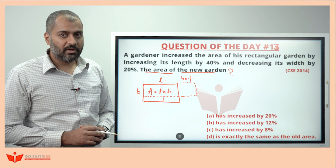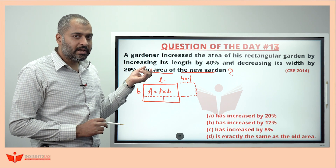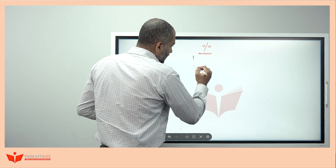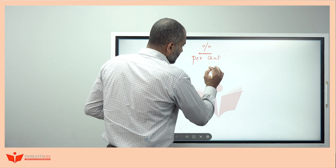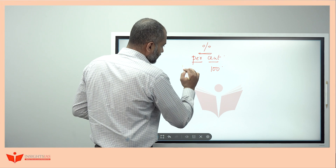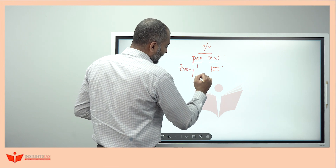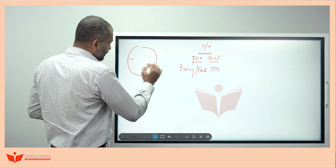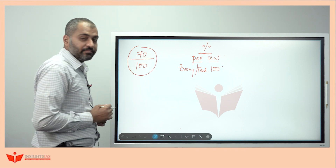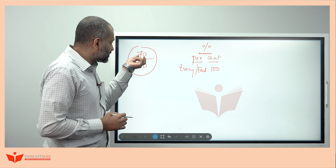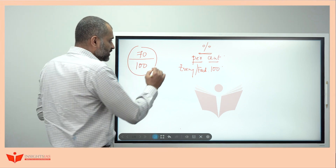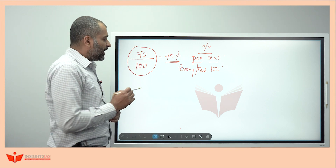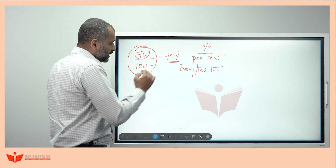Before solving this question, we will take up some basics of percentage. The percent symbol — cent means 100 and per means every or each. In academics, we used to get scores like 70 out of 100. For 100 marks, if you are scoring 70 marks, your percentage of marks is 70%. Percent means when you compare any number to 100, that is called percentage.